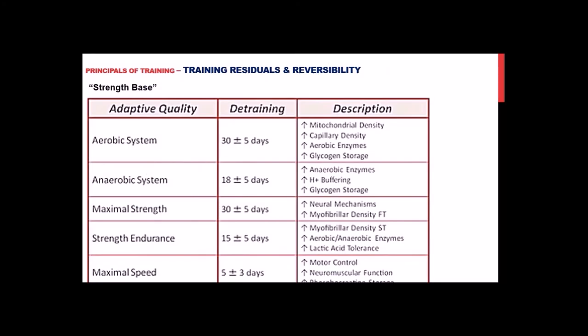Now let's talk about periodization basics. Periodization is essentially planning your season ahead of time to ensure all training occurs cohesively. It's a confusing topic if you read deeply about it, so we'll keep it simple. First: training residuals and reversibility. When you train a quality, it takes time to see improvement, and if you stop training it, it takes a certain amount of time to detrain — and that differs depending on the quality.